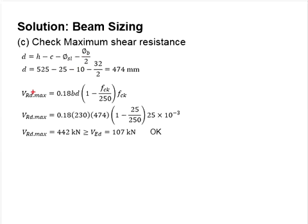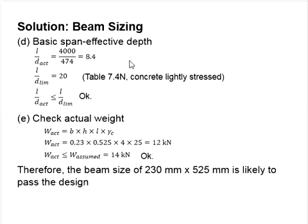Substitute the relevant value into these equations in order to determine the maximum resistance shear force of the beam. You will get the shear force to be 442 kN. Compared to the shear load of 107 kN, it is greater than the shear load. Therefore, the shear resistance is considered acceptable.